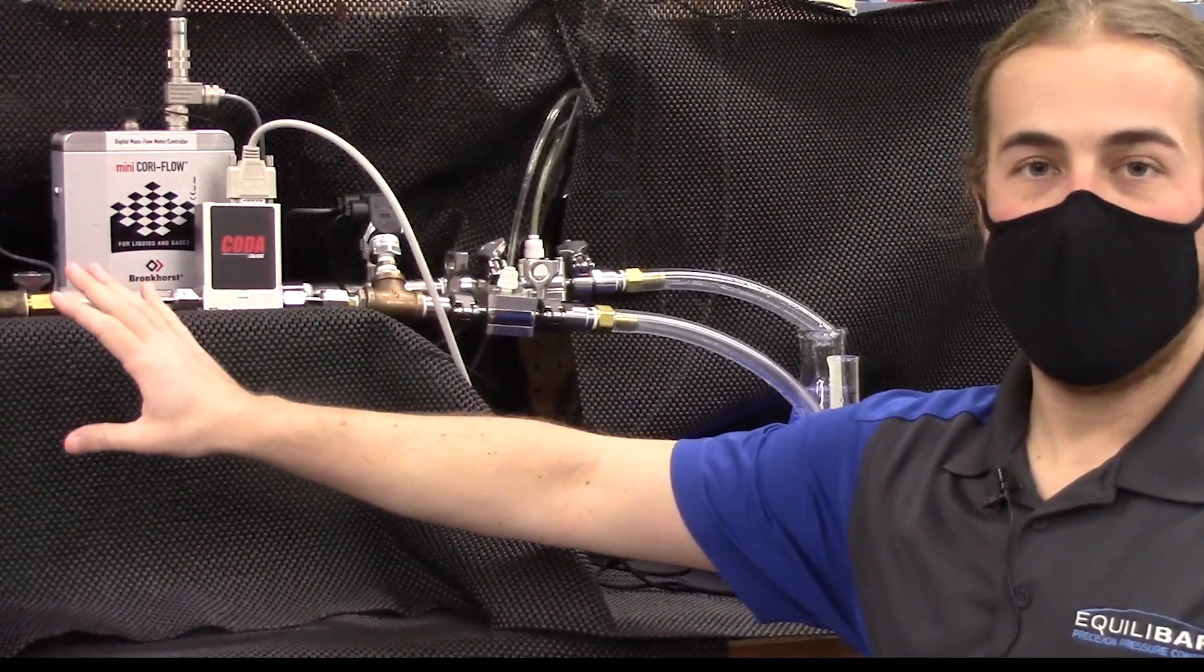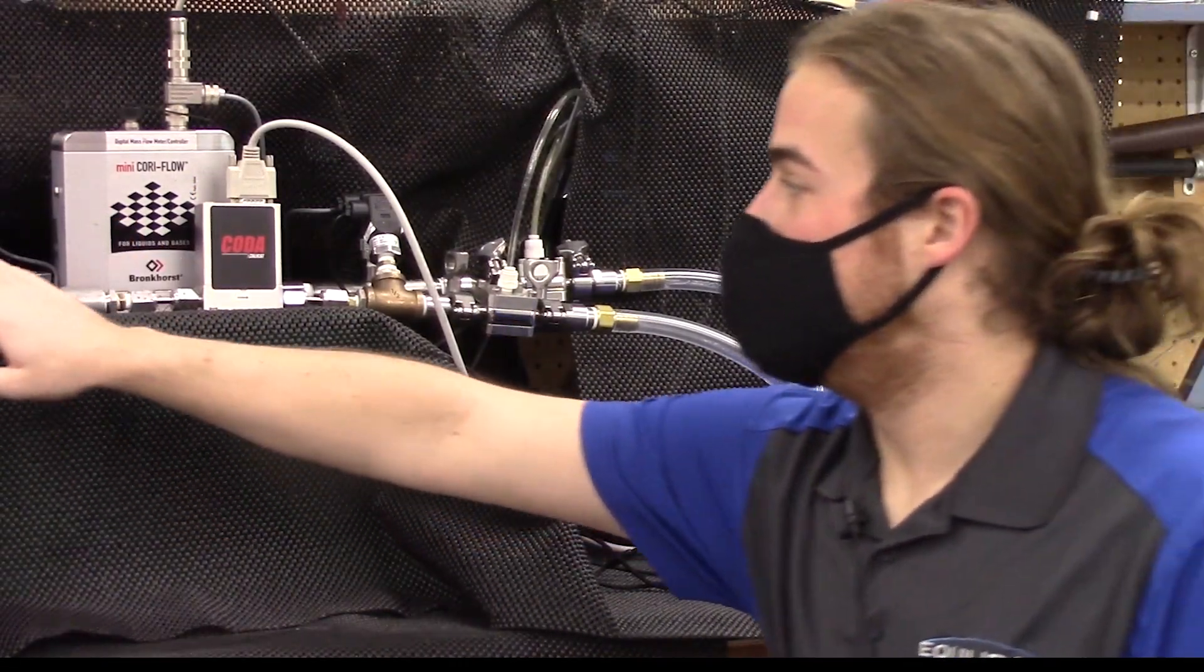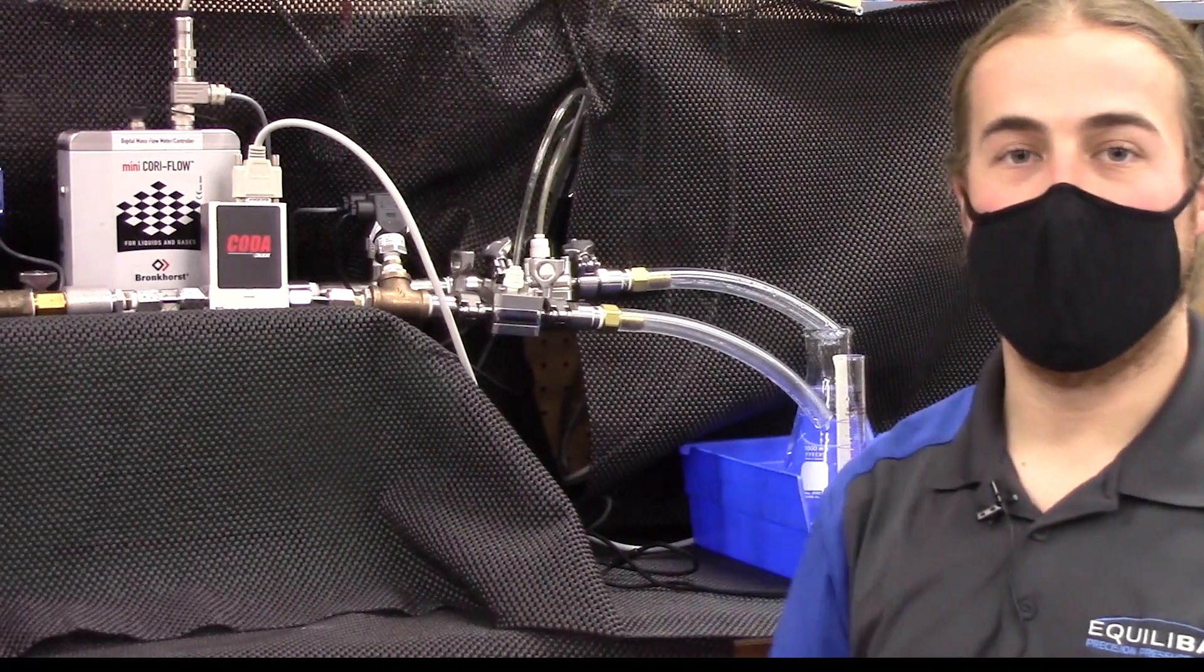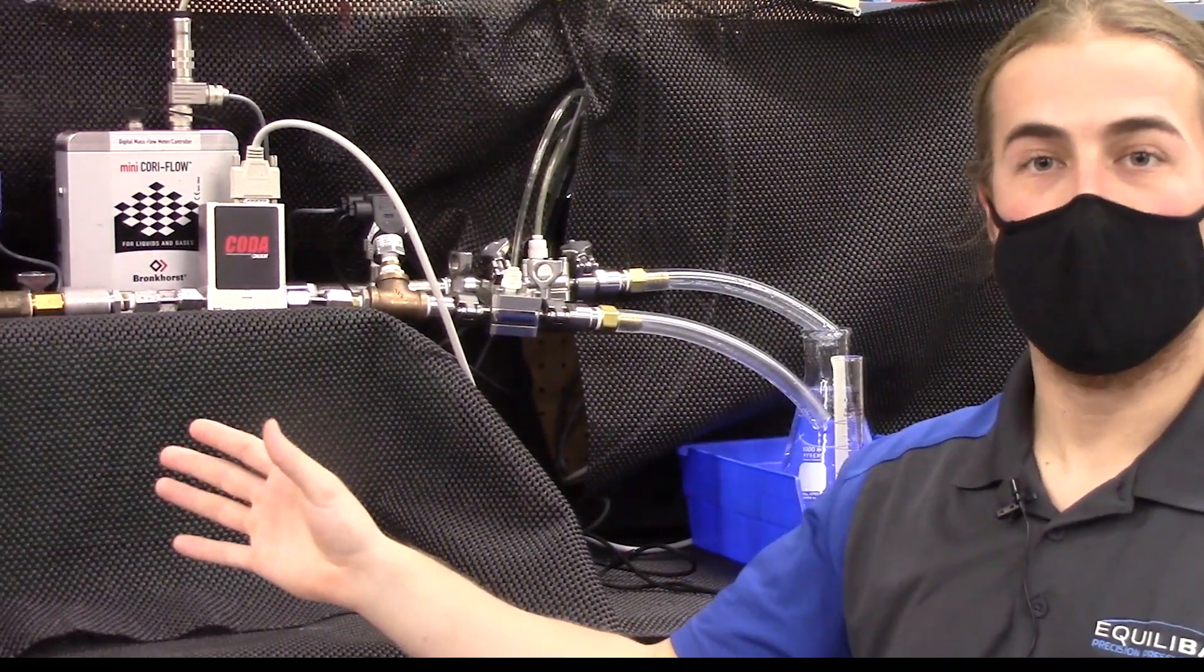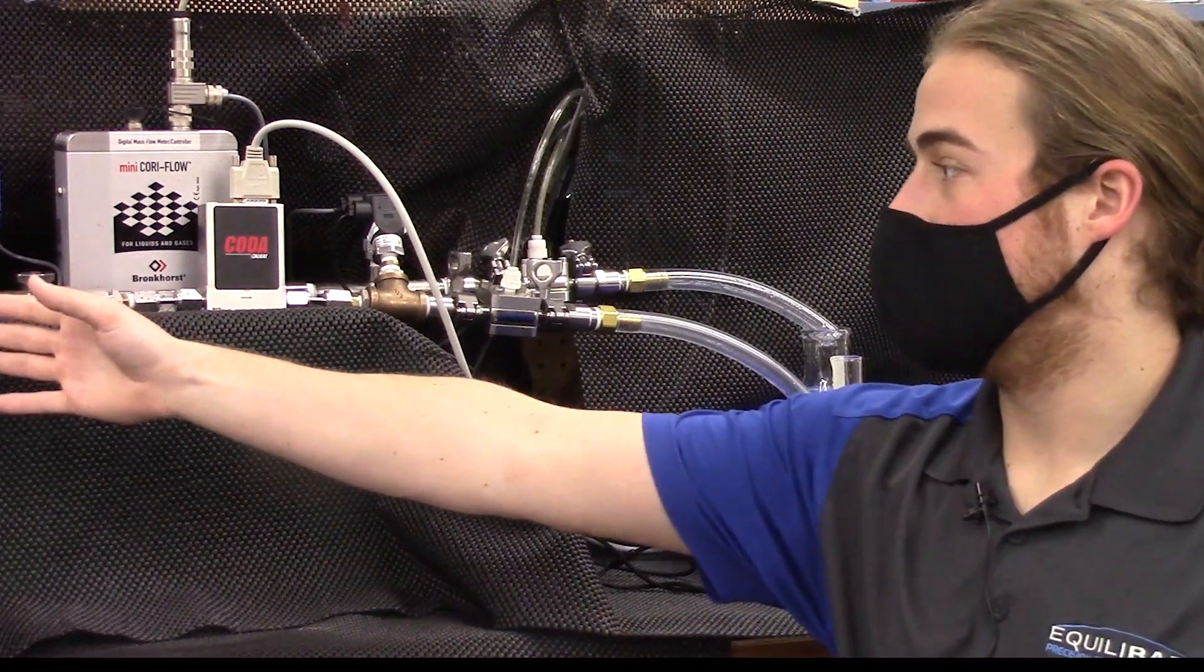So here is our setup in the lab. Just like the schematic here, we have two independent lines that are being supplied by head pressure driven flow systems. In this case, we're supplying roughly 15 psi to our upstream side here.